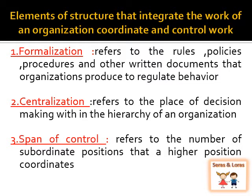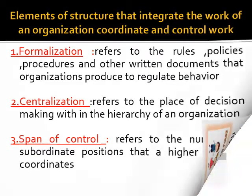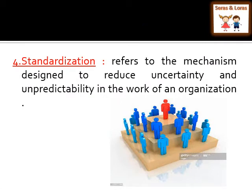The third integration element is span of control, which refers to the number of subordinate positions that a higher position coordinates. There are different departments in an organization and for each department there is one head person. Span of control means the number of subordinates controlled by a head person. These are the elements of structure that integrate the work of an organization: formalization, centralization, and span of control. There is one more element — standardization — which refers to the mechanism designed to reduce uncertainty and unpredictability in the work of an organization. All works are done in a standardized manner to avoid any kind of uncertainty and unpredictability.